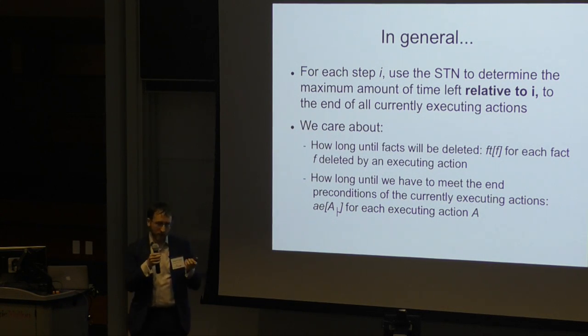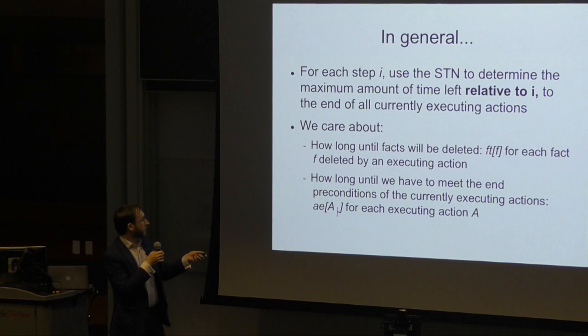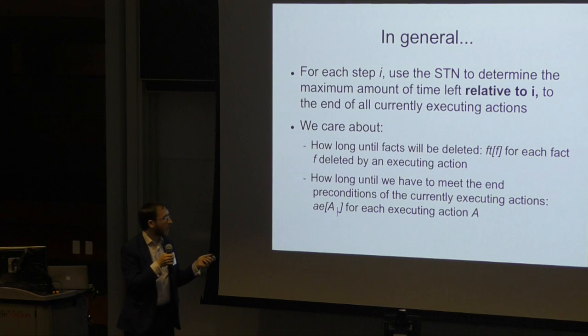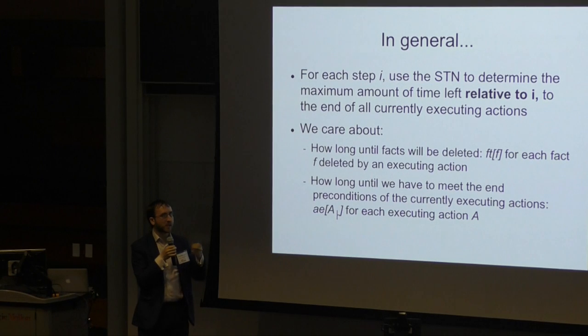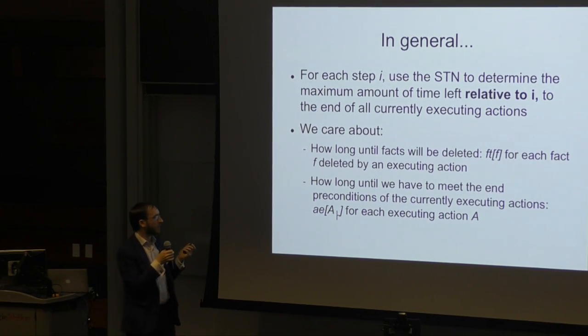The things I care about are how long it will be until a fact F is going to be deleted by one of these executing actions. So I'm going to record that as FT of F, so for a given step I'm going to record that information. And also how long do we have to actually satisfy the end preconditions of one of these executing actions. I'm going to denote that as AE, so the action end of action A, for each action A which is executing in the state we are evaluating. And now to push these into the temporal relaxed planning graph, instead of labeling our layers with just a timestamp, we're going to label them with a tuple.